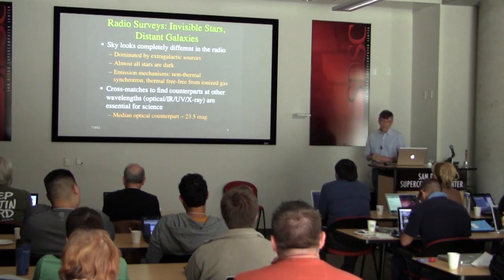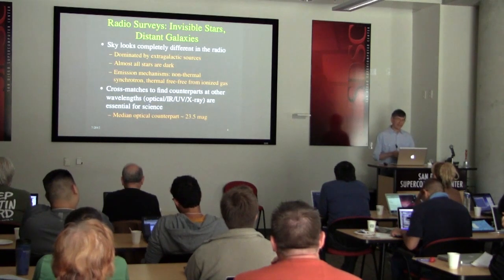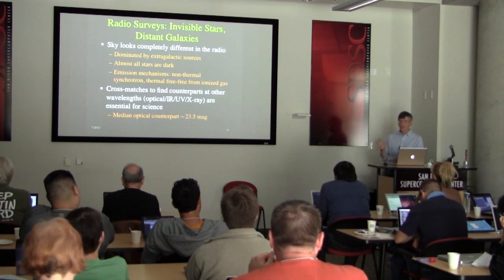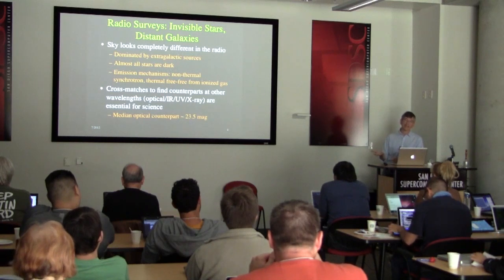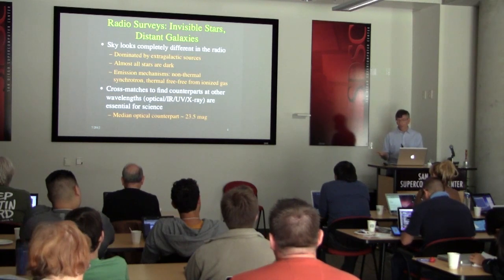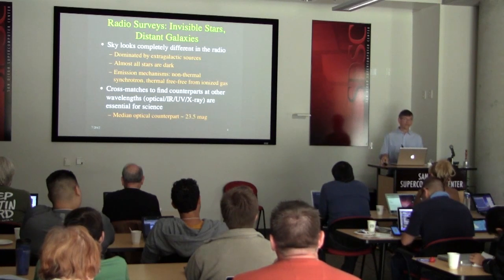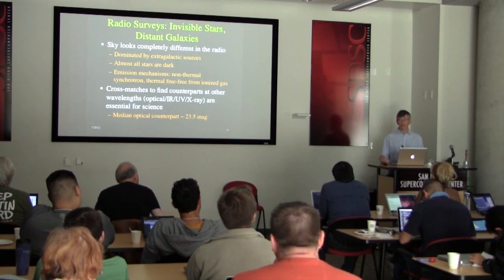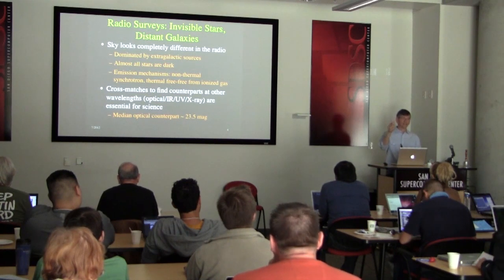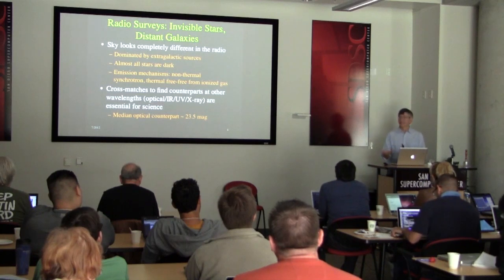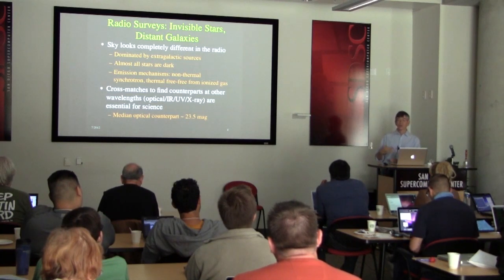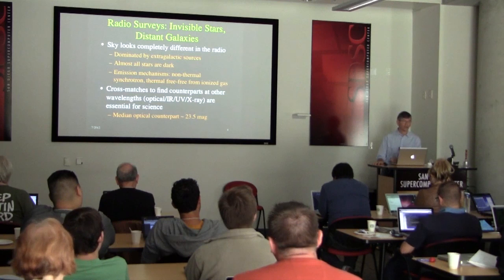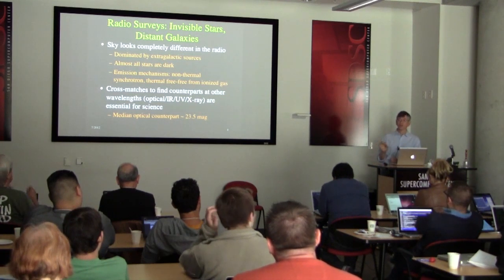Because the radio is so unusual, it's probably more important in radio than at any other wavelength to find cross-matches for radio sources at other wavelengths. For the vast majority of radio sources, there's no way to get a redshift from radio observations alone. A stellar radio source and a galaxy at redshift three may look very similar in radio properties — you have to cross-match catalogs.